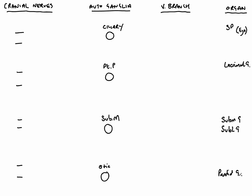So let's go over the cranial nerves that contain autonomic fibres. There's the oculomotor nerve, cranial nerve three. There's the facial nerve, cranial nerve seven. There's the glossopharyngeal nerve, cranial nerve nine. And there's the vagus nerve, cranial nerve ten.